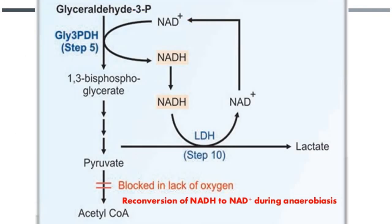To clarify the mechanism: glyceraldehyde-3-phosphate must be phosphorylated and oxidized. The phosphate comes from inorganic phosphate. Due to oxidation, the aldehyde is converted to an acid, and the hydrogen removed results in reduction of NAD+ to NADH. This NADH travels along through glycolysis, and during anaerobic respiration pyruvate is converted to lactate by lactate dehydrogenase (LDH), at which point NADH is re-oxidized to NAD+.